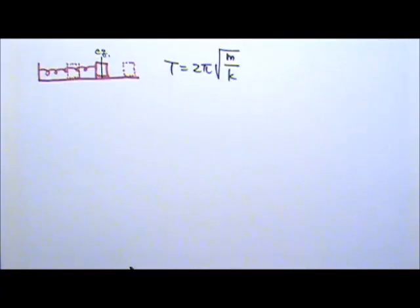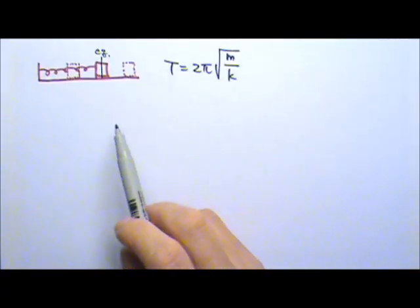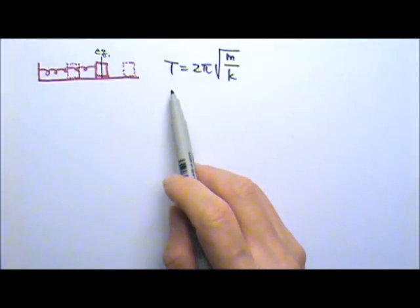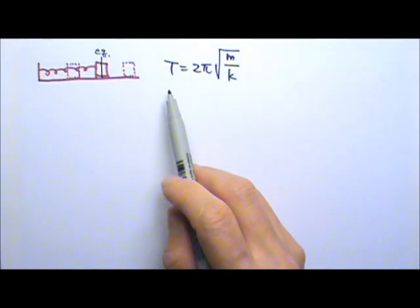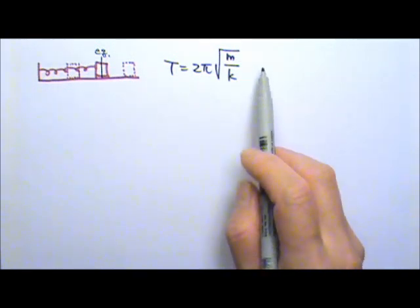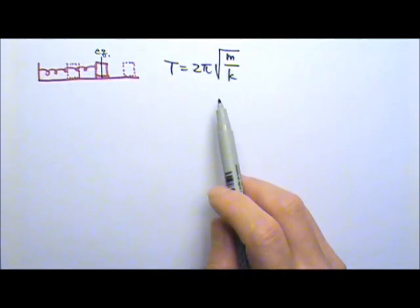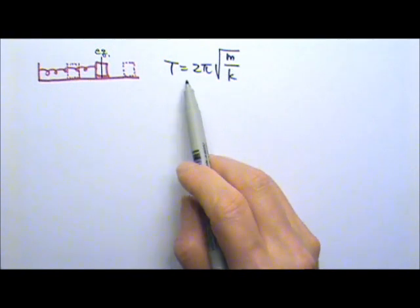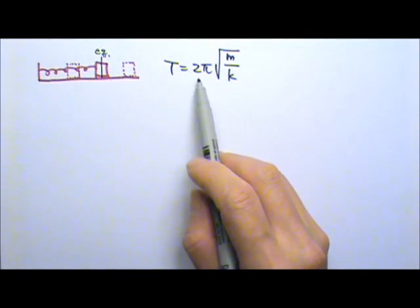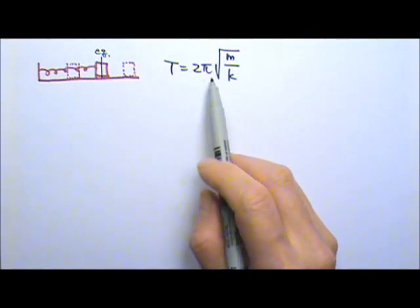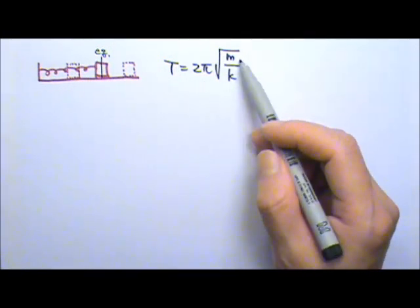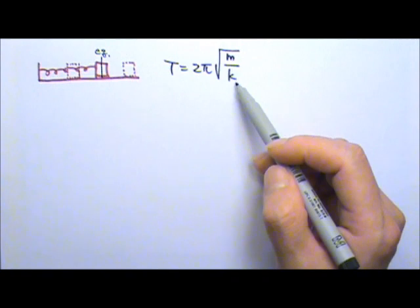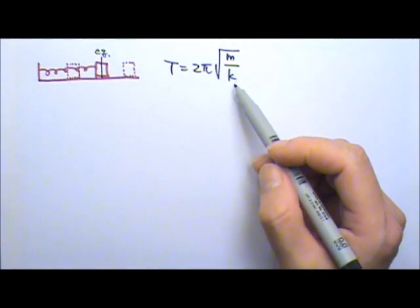In the last video, we derived the period equation using the matching circular motion. Now let's take a better look at this equation. Period equals 2π times the square root of mass divided by the spring constant.